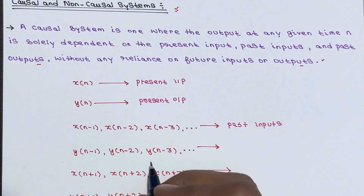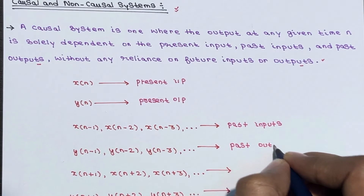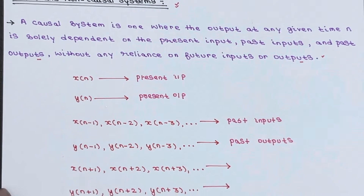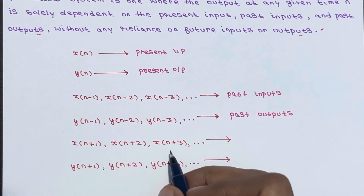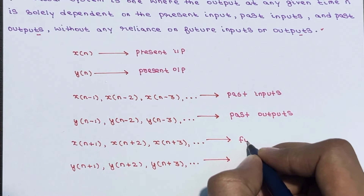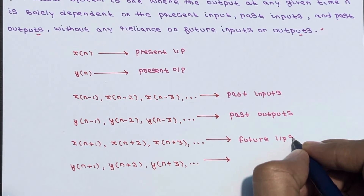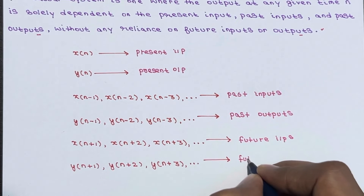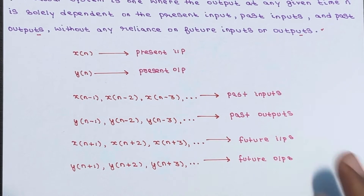Terms like y of n minus 1, y of n minus 2, y of n minus 3 are past outputs. And for future inputs: x of n plus 1, x of n plus 2, x of n plus 3 are future inputs. Similarly, y of n plus 1, y of n plus 2, y of n plus 3 are future outputs. You should know these terms at least.